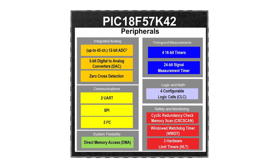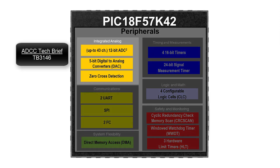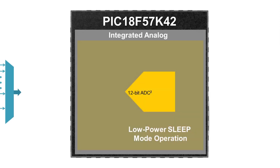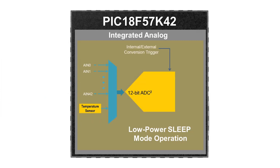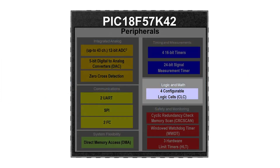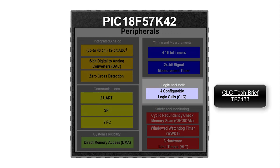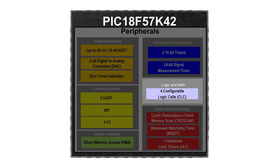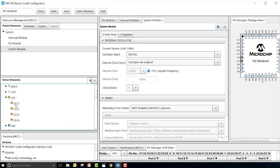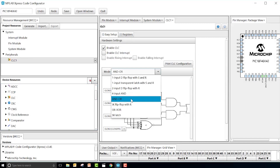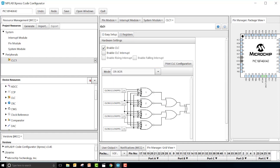The PIC 18F57K42 is the first PIC featuring a 12-bit ADC with computation, which automates analog signal analysis for real-time system response. It also features up to four configurable logic cells that operate outside the speed limitations of software execution. Now, instead of writing software for your logic or adding additional external logical components, all of this configuration can be done from within the configurable logic cell peripheral.